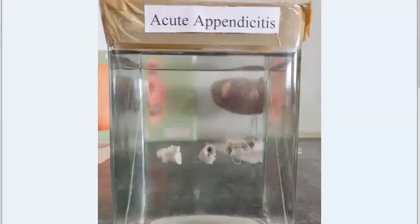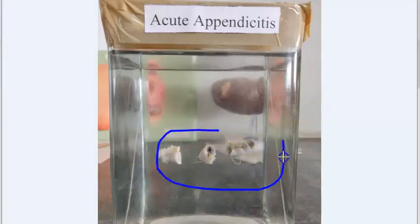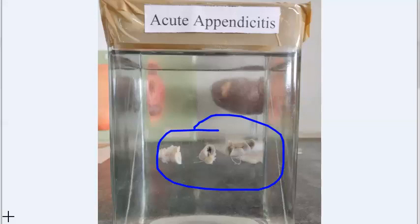In this video, we look at very specific important features about gross specimens. This is acute appendicitis — the appendix is swollen, there is fibrinopurulent exudate, the mucosa is ulcerated and sloughed off, and the serosa will be hyperemic. In microscopy, you will see a lot of neutrophils — neutrophilic infiltration and purulent exudate. The mucosa is ulcerated and sloughed off, and there could be fecalith.